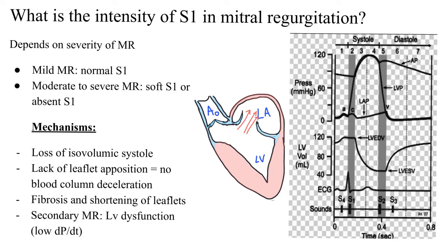What does tethering mean? Essentially, it means that it pulls on these two leaflets so that they do not oppose at the center. As a result, there is a gap between the tips of the two leaflets leading to leakage and mitral regurgitation. Another reason for secondary MR in cases of LV dysfunction is annular dilatation.